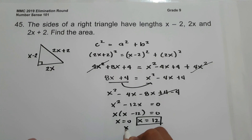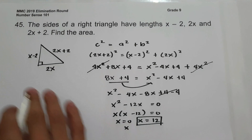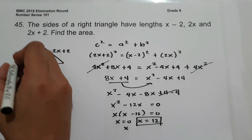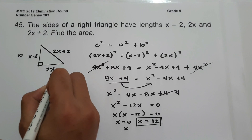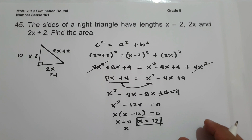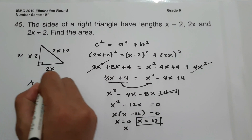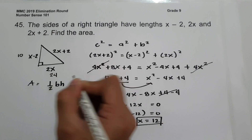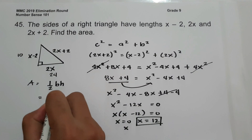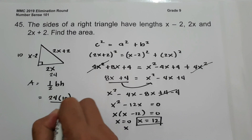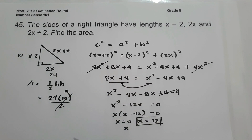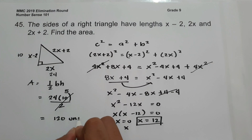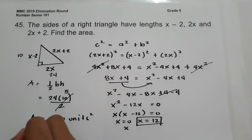Substituting x equals 12: the side x minus 2 becomes 12 minus 2, which is 10, and 2x becomes 2 times 12, which is 24. The area of a right triangle is one-half times base times height. So the area equals one-half times 24 times 10, which simplifies to 5 times 24, giving us 120 square units. This is our answer.